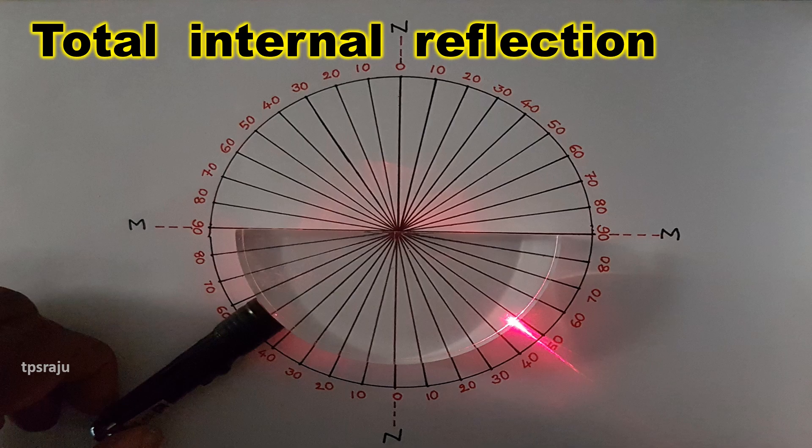When the angle of incidence is greater than the critical angle refraction does not take place. The total light ray is reflected into denser medium. This phenomenon is called total internal reflection.